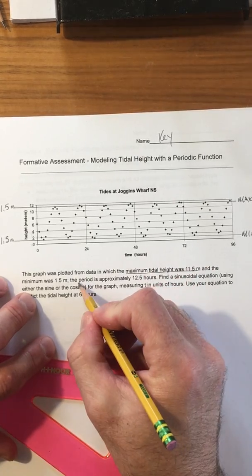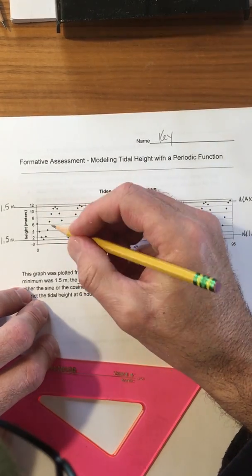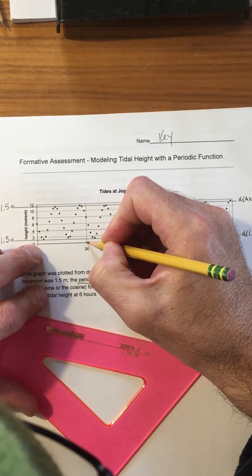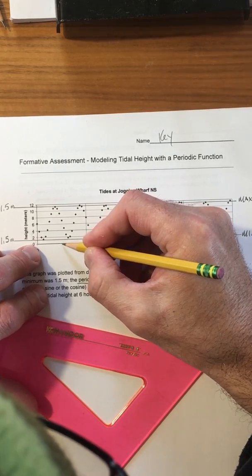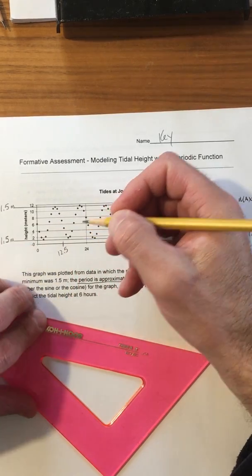And then the next thing we know is that the period is approximately 12 and a half hours. So let's see, there's 24, 12 is gonna be here, 12 and a half is gonna be in there somewhere. Let's come back to that.